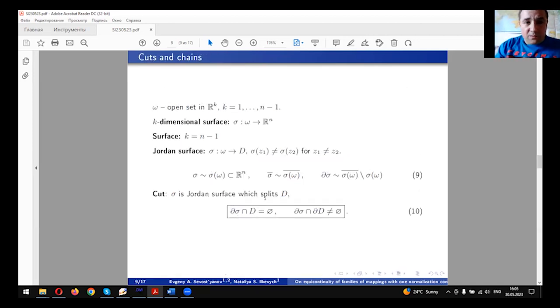Let us recall some other definitions related to prime ends, which we need now. In what follows, Ω is an open set in R^K. A k-dimensional surface is a continuous mapping which is defined in Ω with values in R^n.